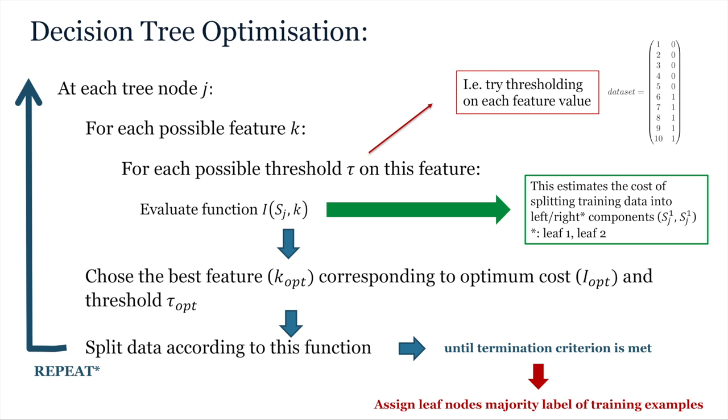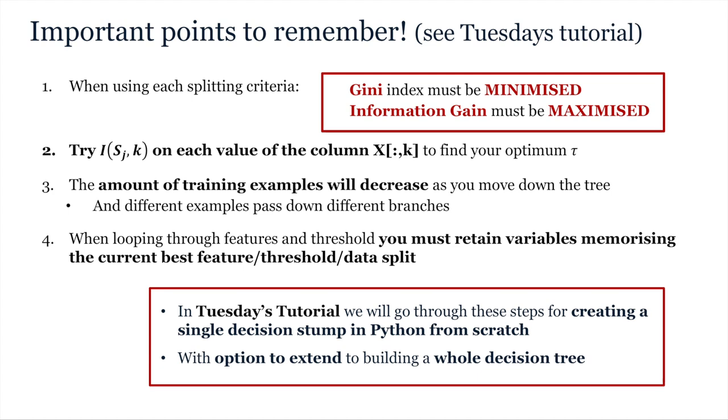Once you've reached that point, the final thing you need to do is assign a label to each leaf node. And you do this by exploring the training labels of all the examples reaching that node. In the case of classification, it would be the majority class of these examples. And for regression, you would fit a constant function to the mean.